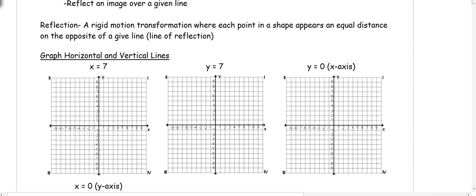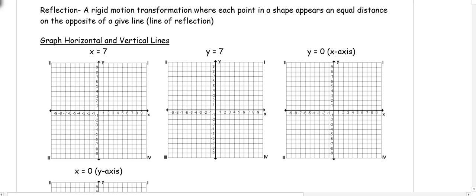Before we start doing reflections, we need to review graphing horizontal and vertical lines. If you have an equation x equals 7, that's a vertical line because 7 is on the x-axis and I want a line that passes through that point. Y equals 7 is a horizontal line because 7 is on the y-axis, so I make a horizontal line to pass through that point.